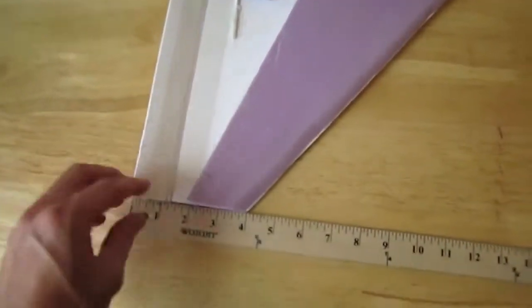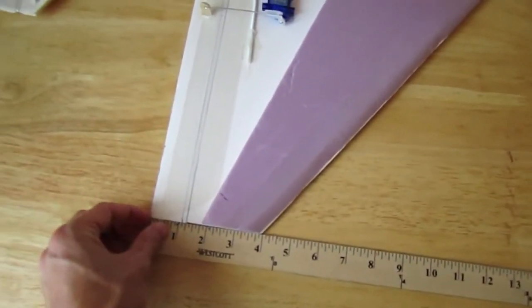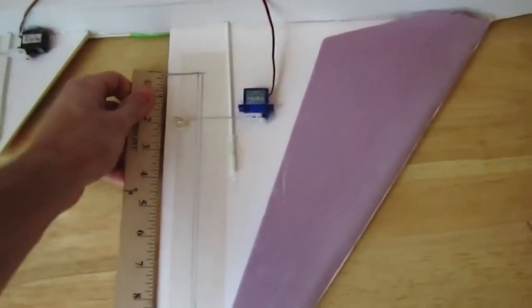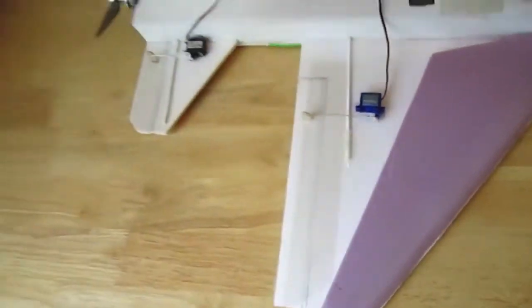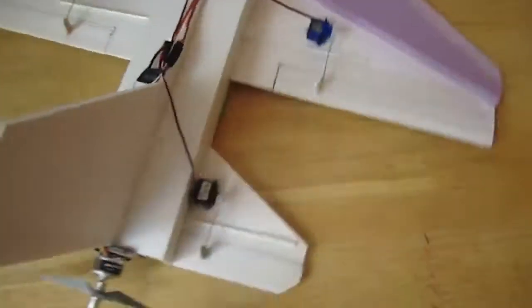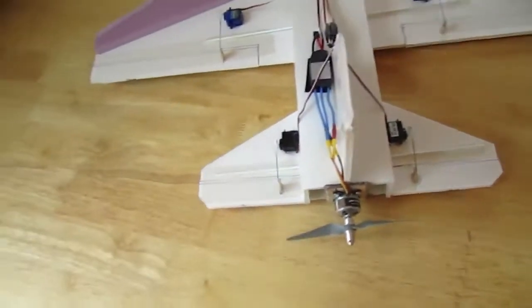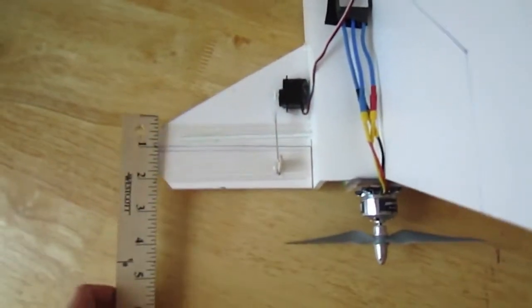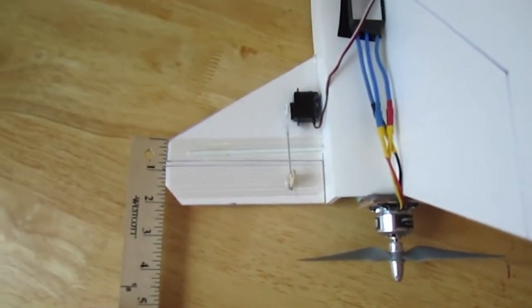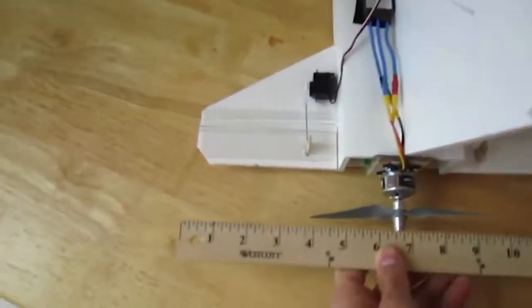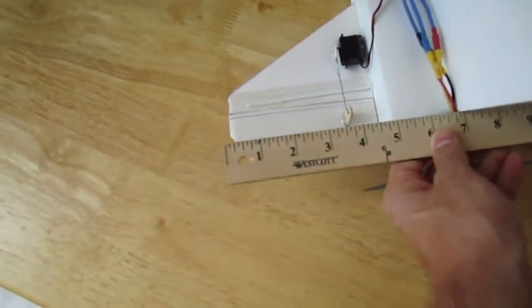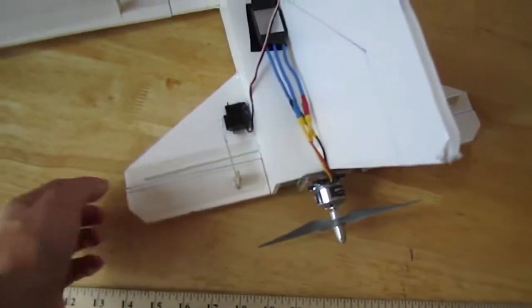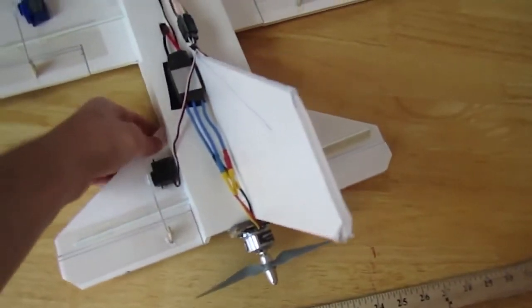And these ailerons, they're just inch and a quarter by 10 inches for the ailerons. And then the tails back here, this is five inches at the root, two inches at the tip and it is five inches out, five inches wide. And those are also glued on there.